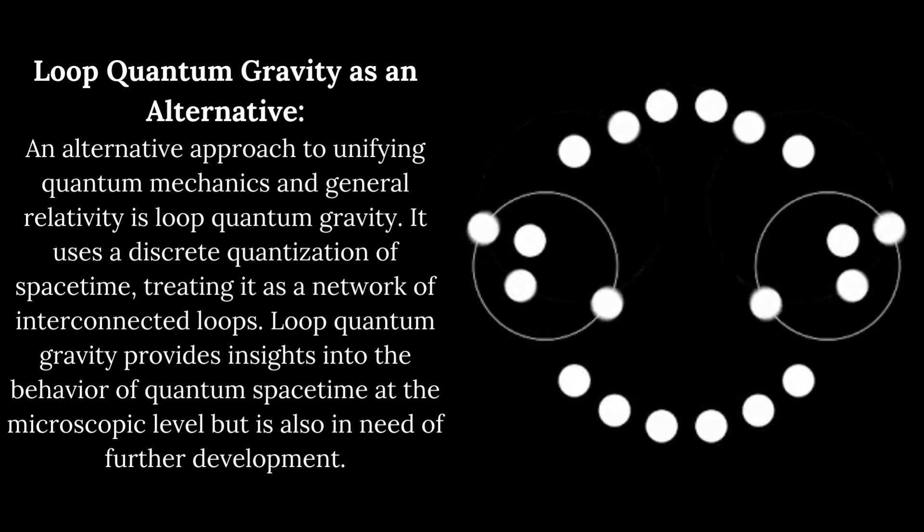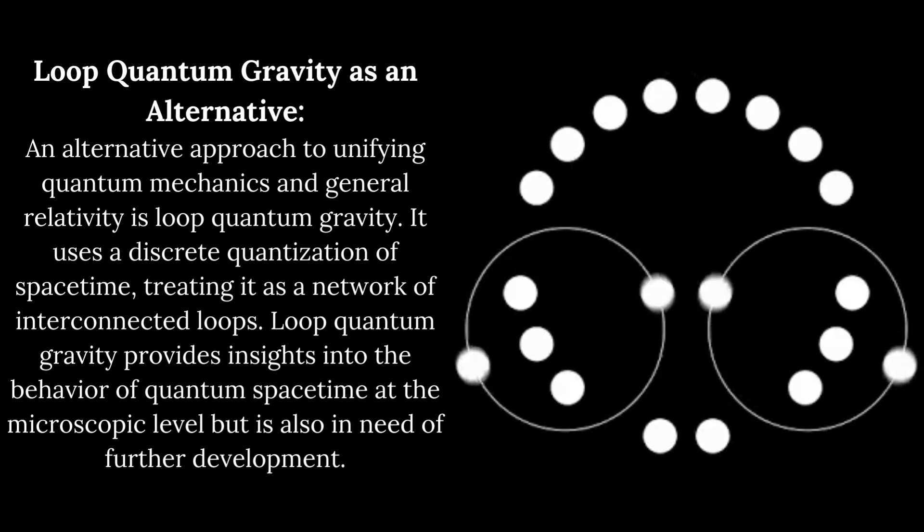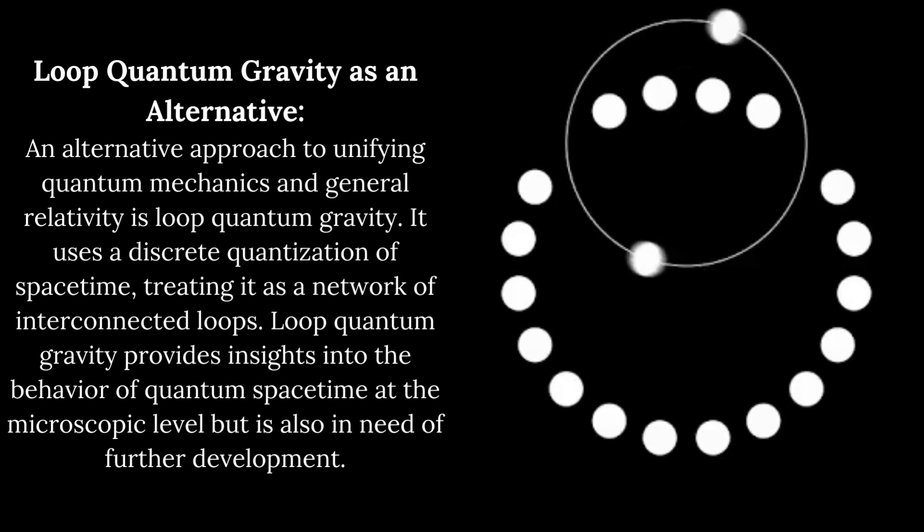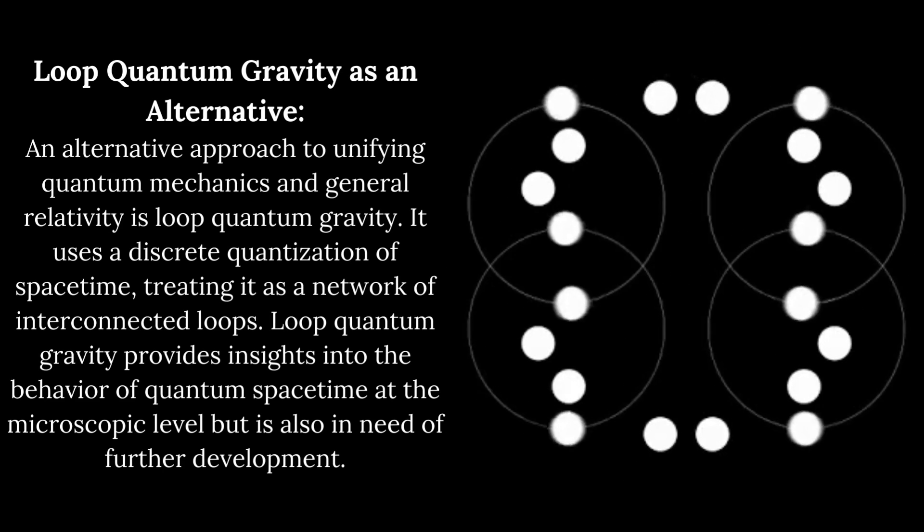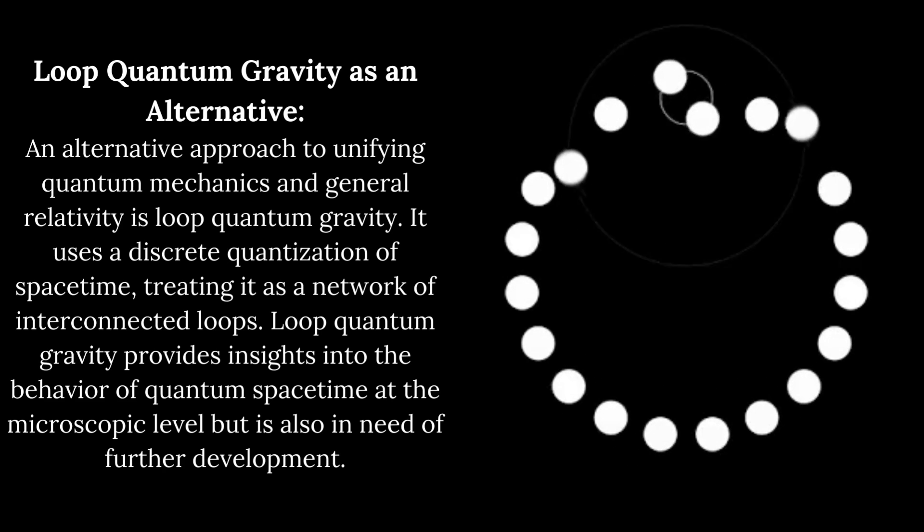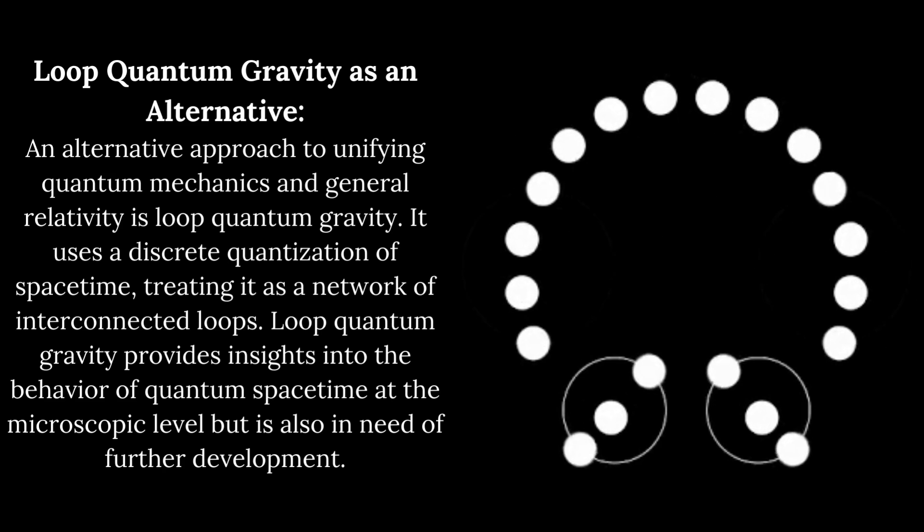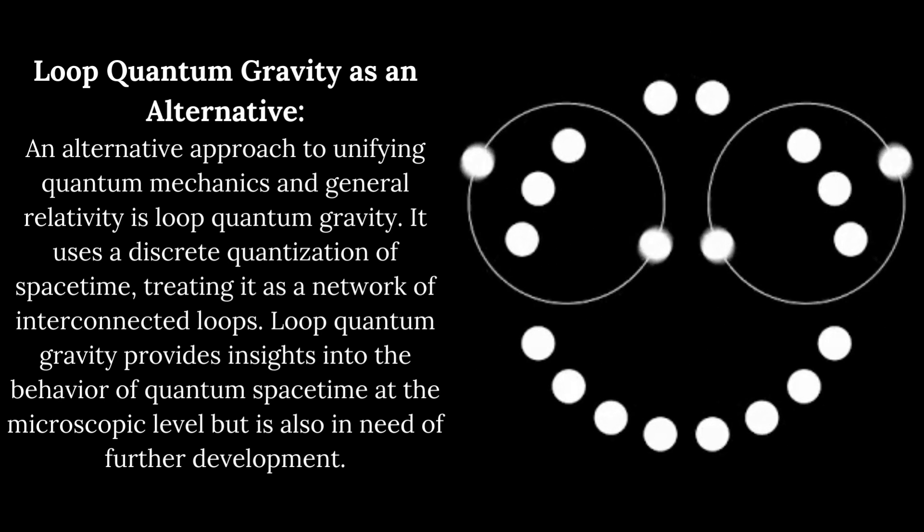Loop quantum gravity as an alternative. An alternative approach to unifying quantum mechanics and general relativity is loop quantum gravity. It uses a discrete quantization of space-time, treating it as a network of interconnected loops.